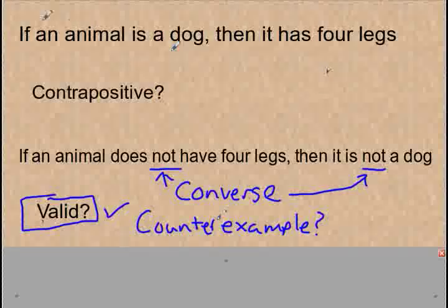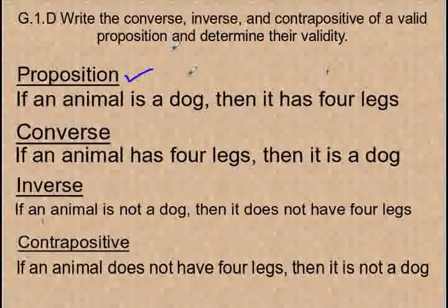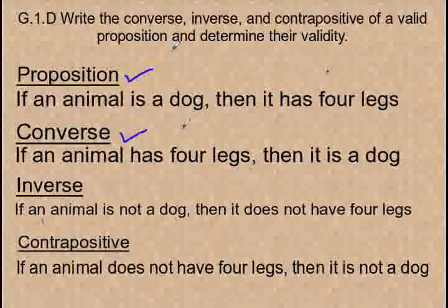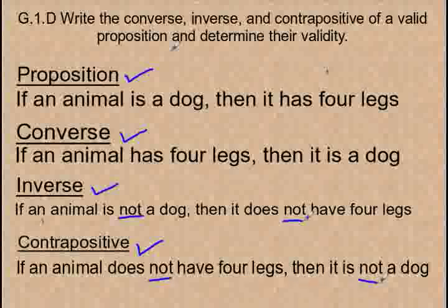We've talked about writing the converse, the inverse, and the contrapositive of a statement. Let's take a look at all four of them together. Here's the original statement: If an animal is a dog, then it has four legs. Here is the converse: If an animal has four legs, then it is a dog — you flip-flop or switch the if and then parts. Here's the inverse: If an animal is not a dog, then it does not have four legs — that's the original proposition with 'nots' making the if and then negative. And the contrapositive: If an animal does not have four legs, then it is not a dog — closely related to the converse with the addition of 'not, not.'